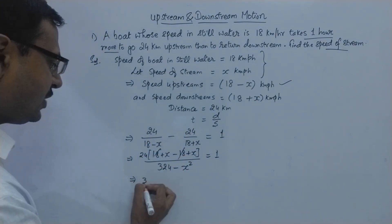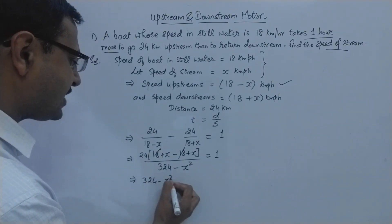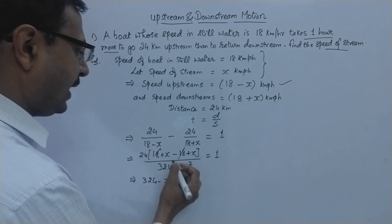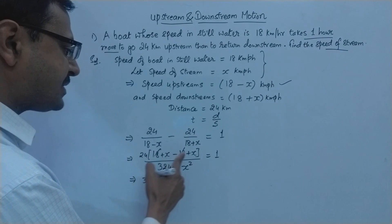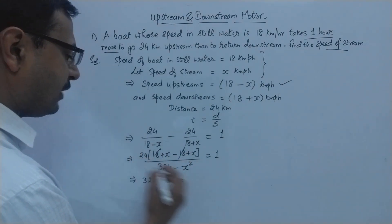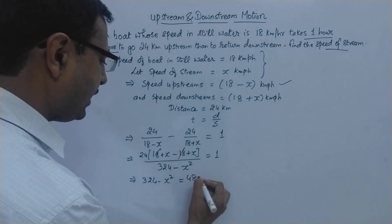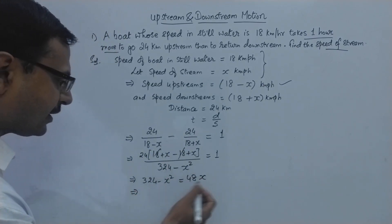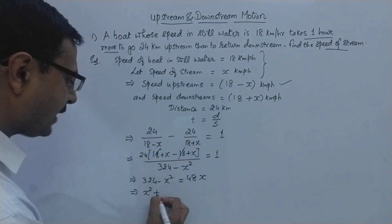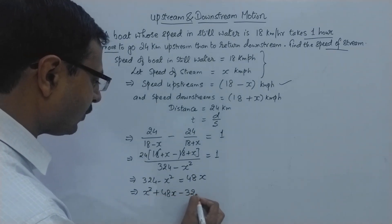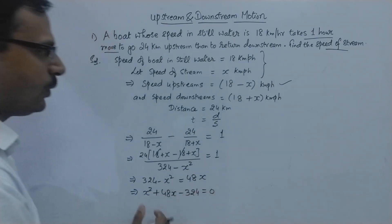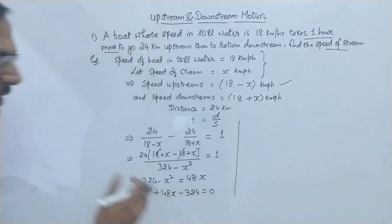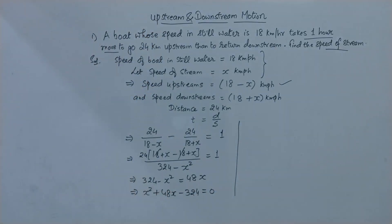Thereby giving us 324 minus x square which gets cross multiplied with 1 and in the numerator we will have x plus x, 2x into 24 that is 48x. So this will give us a quadratic equation. Take the terms to the right hand side: x square plus 48x minus 324 equal to 0.